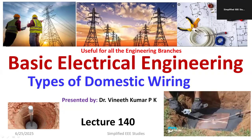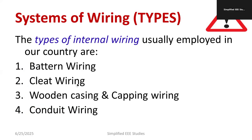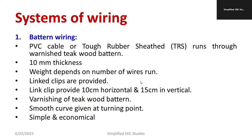Welcome to the lecture series on basic electrical engineering. In this session, I'm going to discuss the different types of domestic wiring. I gave an introduction in my previous session, which is available in the video description. The four most popular types of domestic wiring are: batten wiring, cleat wiring, wooden casing and caping wiring, and conduit wiring.